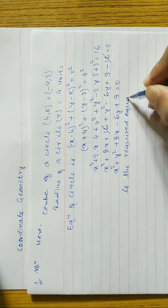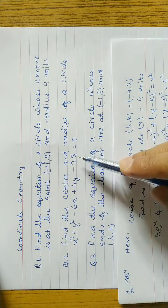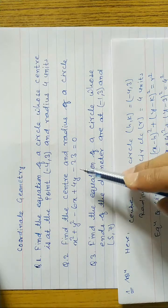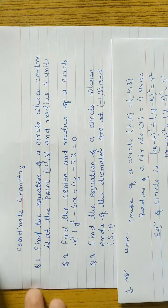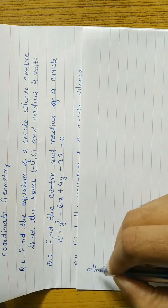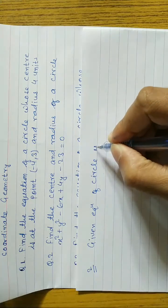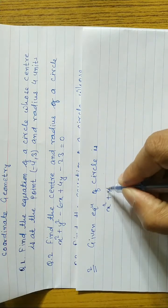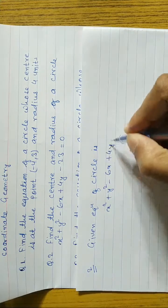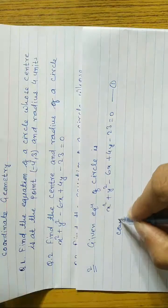Now look at the next question — question number 2. Find the center and radius of a circle. Here an equation of a circle is given and we need to find the radius and center. This type of question is repeated maximum times. So look at question number 2: find the center and radius. The given equation of the circle is x² + y² - 6x + 4y - 23 = 0. Call this equation (1). Comparing with the general form: